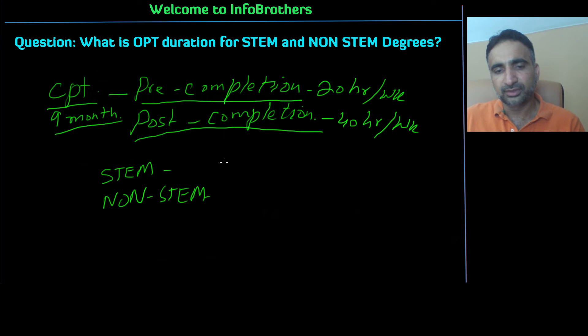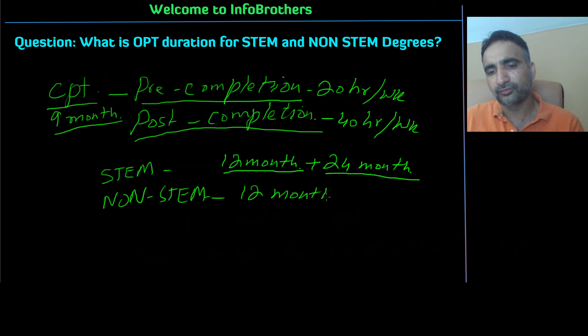So for STEM, you will get 12 months in the starting once you apply for your OPT and then you have an extension of 24 months. Before it was 17 months, but from 2016, it is a 24 months extension. But with the non-STEM, you will always get 12 months of your OPT.